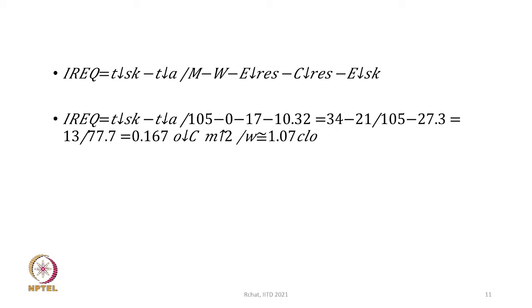This value may vary slightly from person to person since metabolic heat generation varies. In this situation — person sitting in a room at 21°C, no clothing, skin temperature 34°C, relative humidity 50% — the clothing needed is 0.167 °C·m²/W, equivalent to 1.07 clo, close to 1 clo.